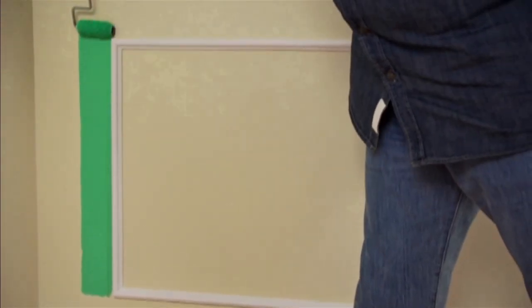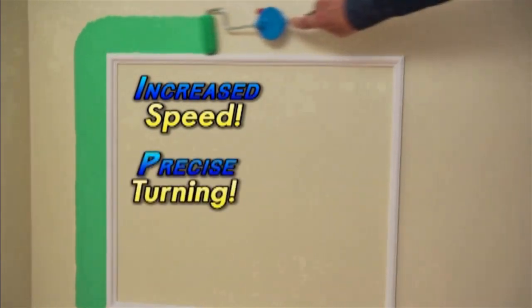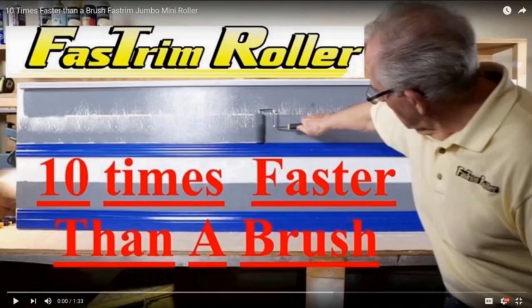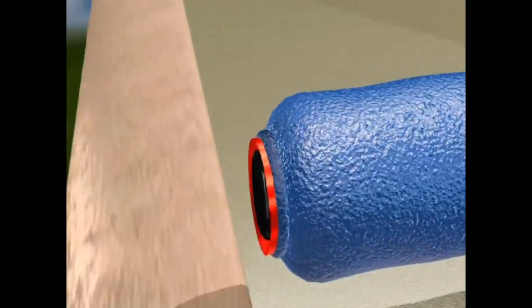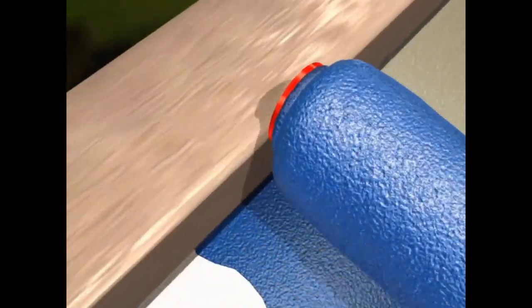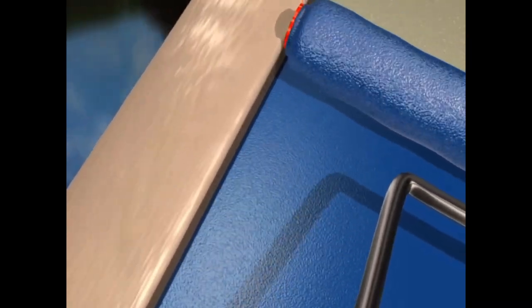You will quickly find the pressure required to edge next to trim, up to ten times faster than a brush. This animated clip shows the roller edging next to trim and creating a perfectly straight line, no tape or brush required.